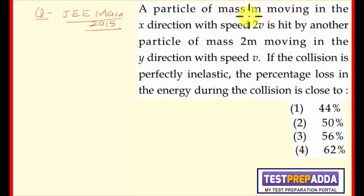A particle of mass m moving in the x direction with speed 2v is hit by another particle of mass 2m moving in the y direction with speed v. If the collision is perfectly inelastic, the percentage loss in the energy during the collision is close to: Option 1 is 44%, option 2 is 50%, option 3 is 56%, option 4 is 62%.